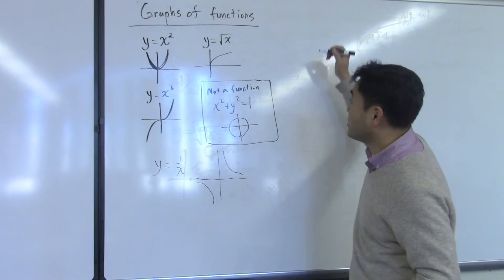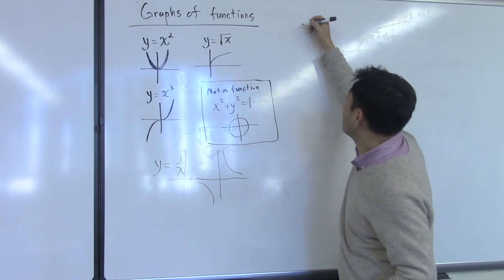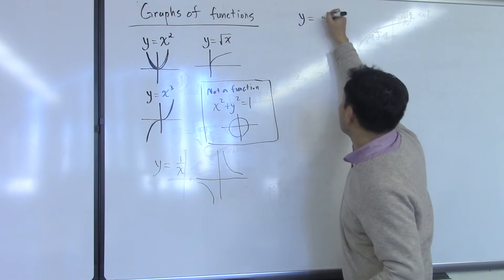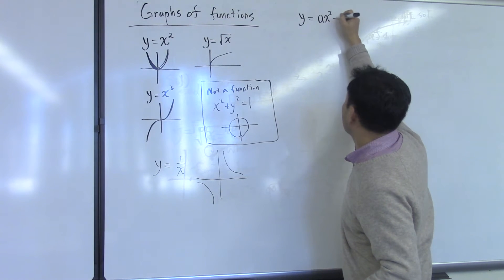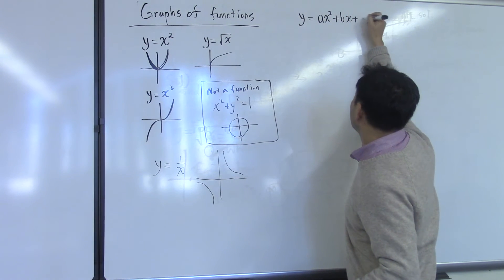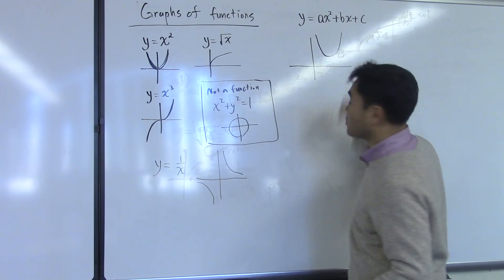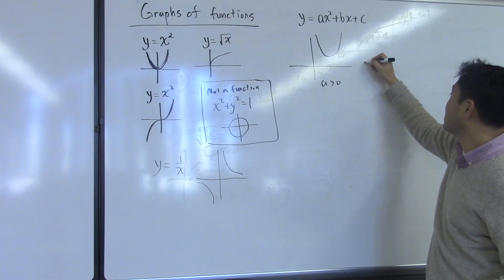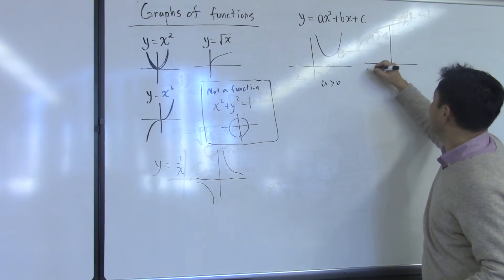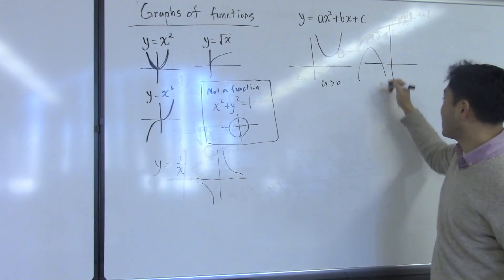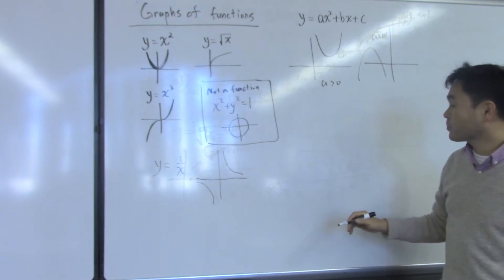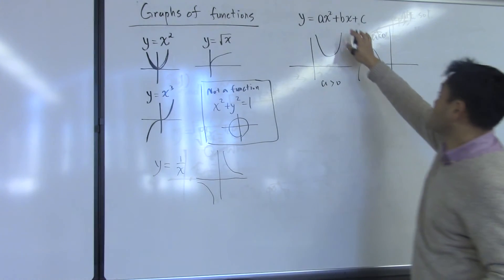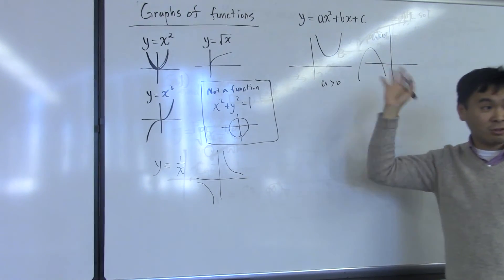So those are the most basic polynomial, rational, and radical functions. To give you a general idea of how other polynomials look: if you have y equal to ax squared plus bx plus c, then it's just some kind of parabola — opening upward when a is positive, or upside down when a is negative. The values b and c change the position of the vertex.